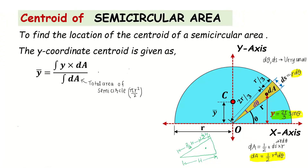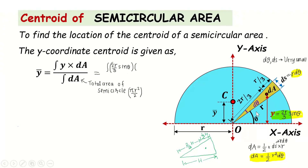Now let's substitute the corresponding values. In the numerator, the value of y — the distance of the small area from the x-axis — is (2r/3)·sinθ. The value of dA is (1/2)r²·dθ. So the numerator becomes the integral of (2r/3)·sinθ × (1/2)r²·dθ, and the denominator is πr²/2.